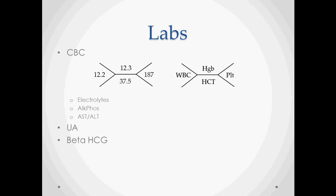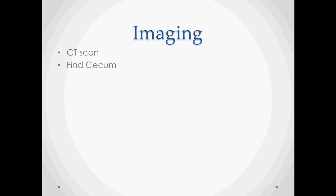Urinalysis and beta-HCG are used for ruling out possible other conditions. Then we do a CT scan — you can look with an ultrasound as well, but a CT scan is going to be the most sensitive test for appendicitis. What you are looking for is the cecum, and the appendix is going to be sticking off the cecum in some direction.